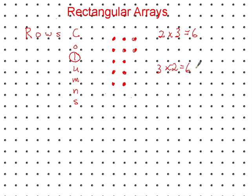Now, the rectangular arrays have the same amount of total dots. They're just flipped around, different number of rows and different number of columns.